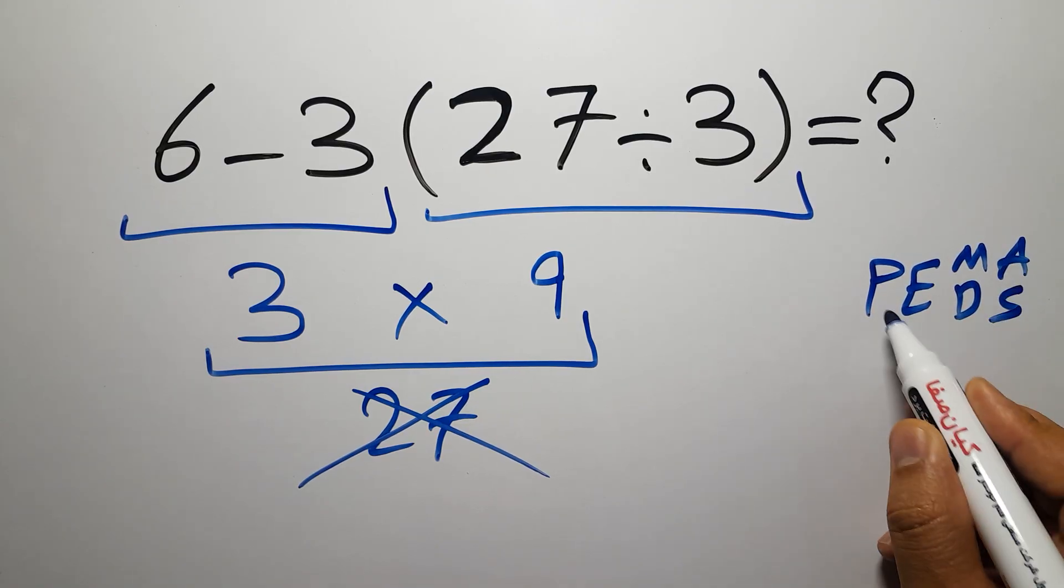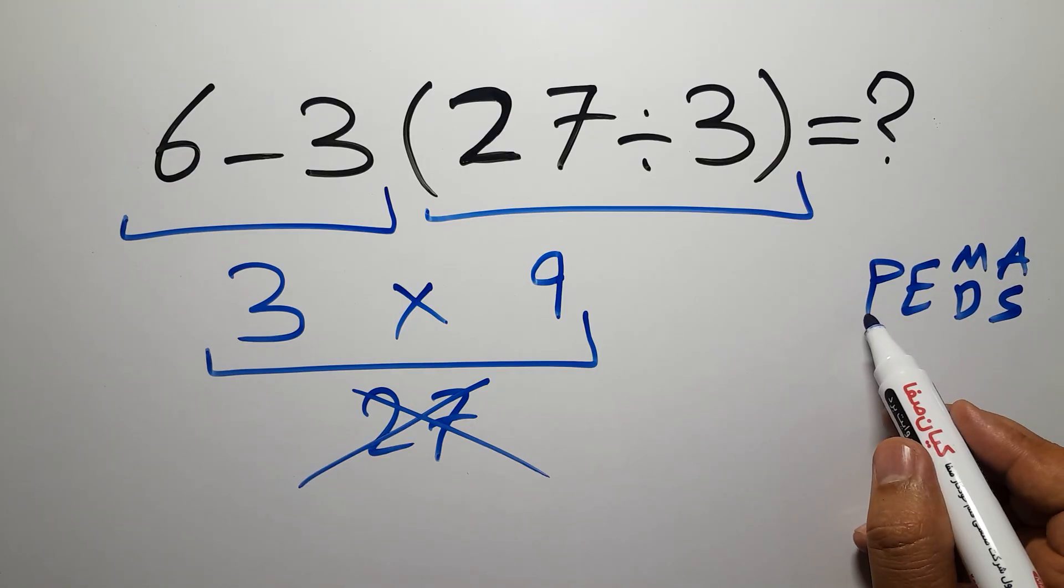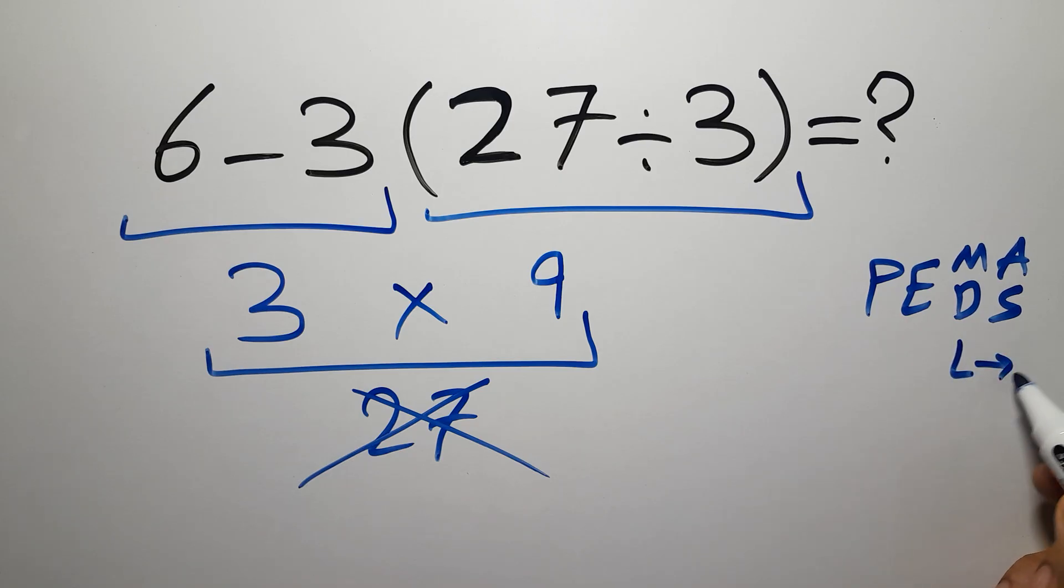Parentheses, exponents, multiplication, division, addition, and subtraction. First we have to do parentheses, then exponents, then multiplication or division, and finally addition or subtraction. Remember that multiplication and division have equal priority and we have to work from left to right. The same applies to addition and subtraction.